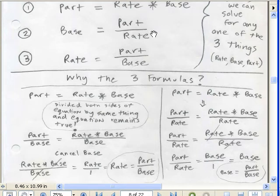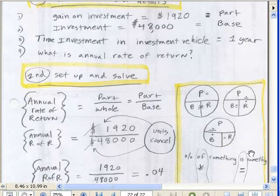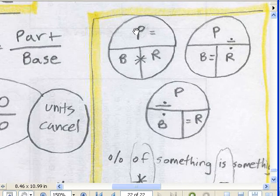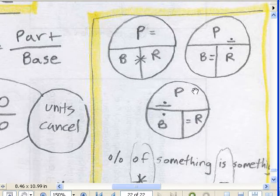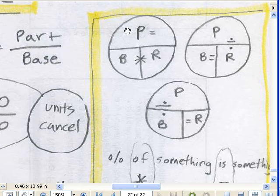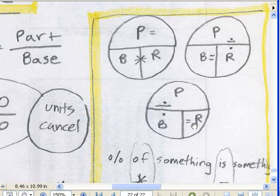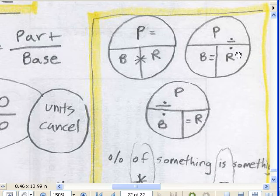Let me go to the last PDF slide — Control+End is the keyboard shortcut. There's a great picture here: P at the top, then B and R below. Part equals base times rate. But if you want to solve for base, cover B and you see P on top of R, meaning P divided by R — wait, base equals P divided by R. And if you want to solve for rate, cover R and you see P on top of B, meaning rate equals part divided by base. That's a cool memorization trick for those who don't like algebra.